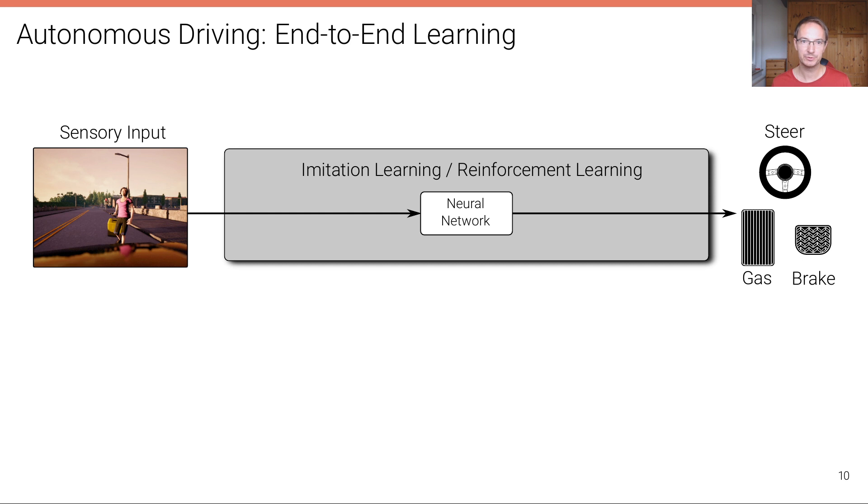An alternative approach to the modular pipeline is end-to-end learning. In end-to-end learning, we are considering this mapping from sensory input to the low-dimensional steering and gas and brake commands as a monolithic function that is typically represented using a neural network. And this neural network then can be trained using different algorithms. The two most important algorithms are imitation learning and reinforcement learning, which we'll learn about in this lecture.